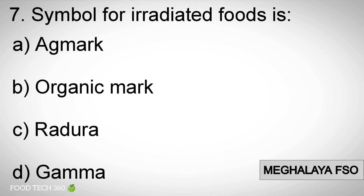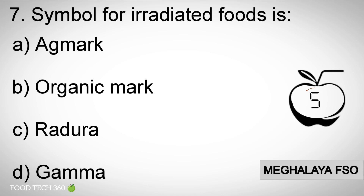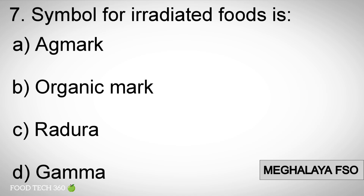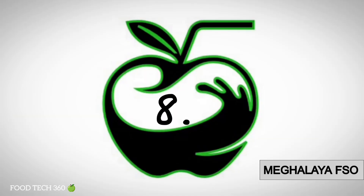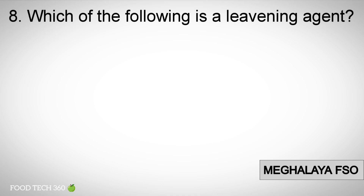Question number seven: Symbol for irradiated food is. Options: A) Agamark, B) Organic mark, C) Radura, D) Gamma. Correct answer: C) Radura.